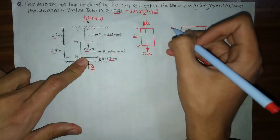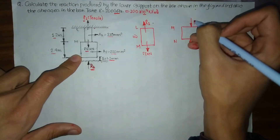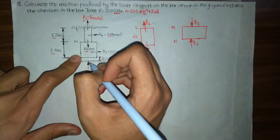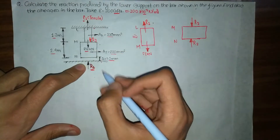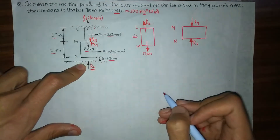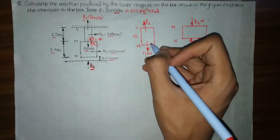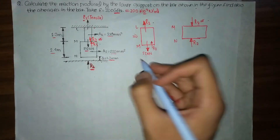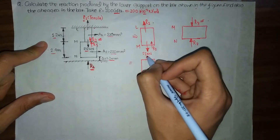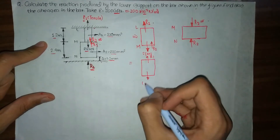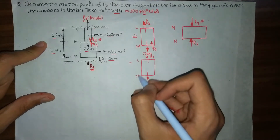For the MN portion, R2 acts vertically upward. To maintain equilibrium, an opposing force must be considered. Our equivalent figure will show that in the downward direction a force of 55 minus R2 is acting downward, covering the LM section from L to M.